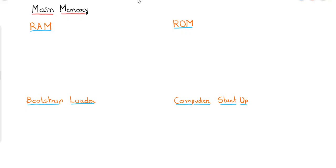In the previous tutorial we discussed the introduction to memory types: CPU registers, cache, main memory, and auxiliary memory. Whenever the CPU wants to perform a data transfer operation from auxiliary memory, it does not have direct access, so it uses the input/output processor, which was discussed in the last tutorial of the previous unit.